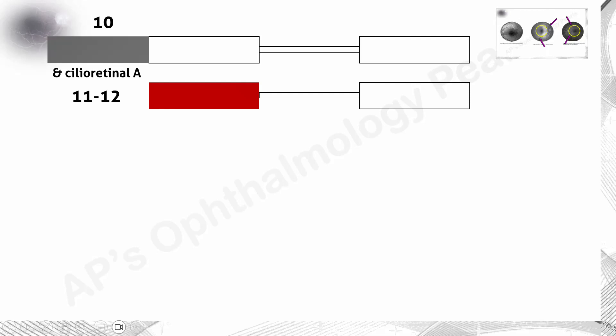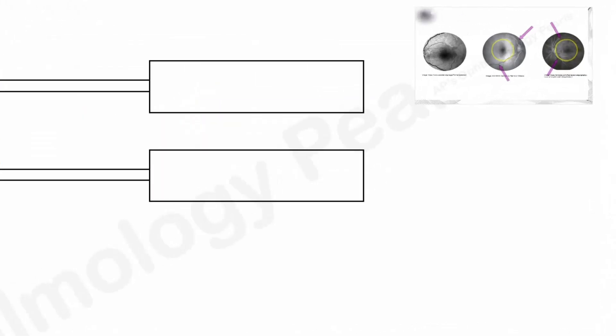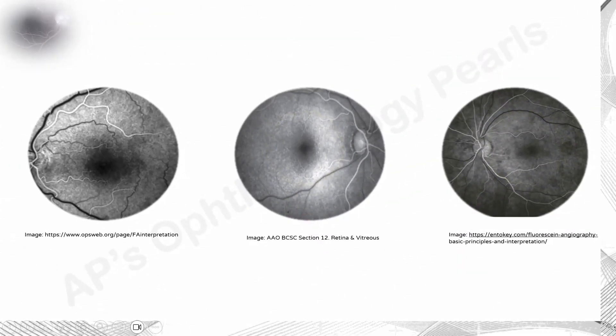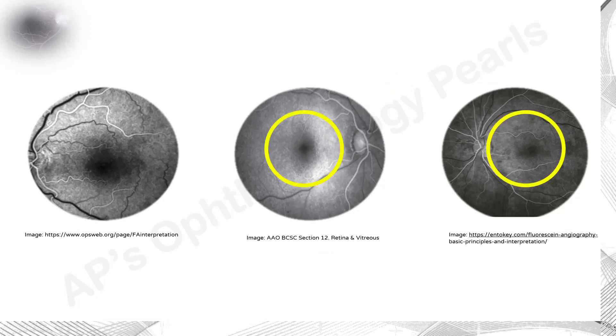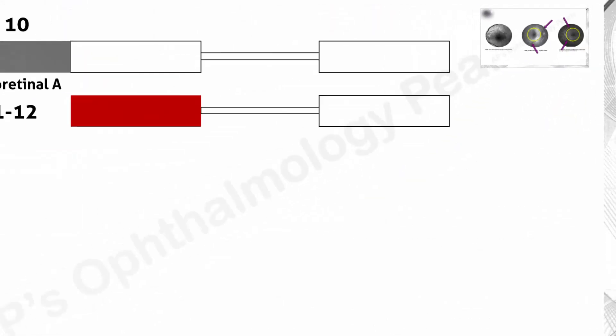The arterial phase of the fluorescent angiogram starts about 1 to 2 seconds after the choroidal flush. This phase starts with the entry of fluorescent dye into the central retinal artery, marking the arm-to-retina circulation time, which is an average of 12 seconds. The veins appear black, and the foveal avascular zone appears darker because of the absence of vessels and the presence of the retinal pigment epithelium, which blocks choroidal fluorescence.